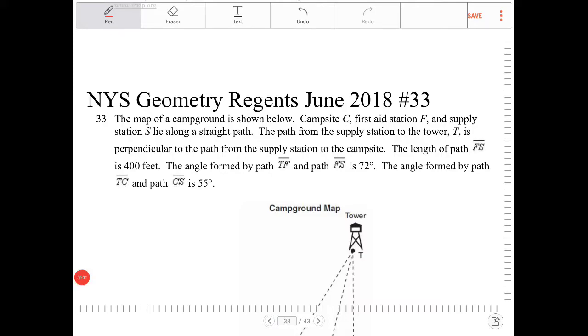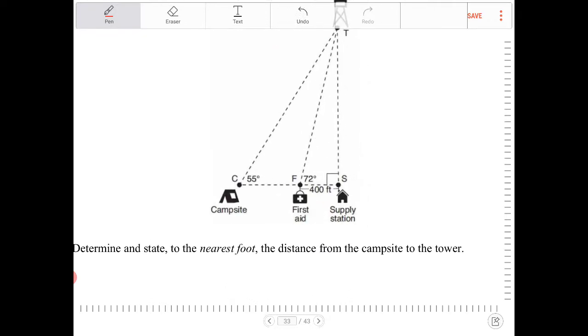The map of the campsite is shown below. Campsite C, first state station F, and supply station S lies along a straight path. So what that translates to, that first statement there, is saying that points C, F, and S, they are all collinear. They are all on a straight line.